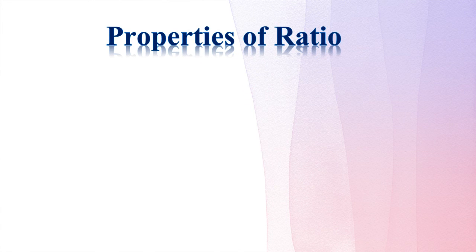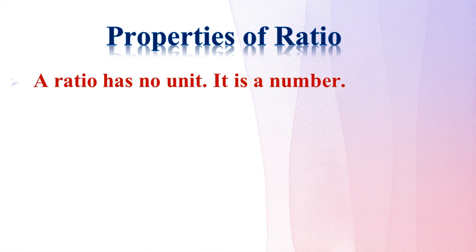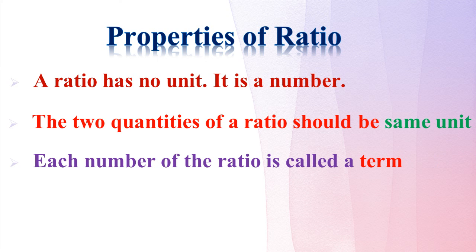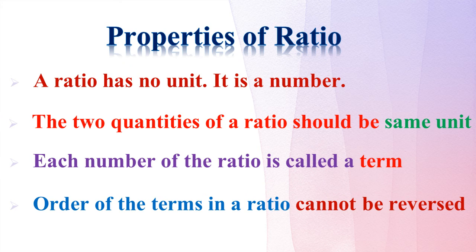Properties of ratio. First property: a ratio has no unit — it is just a number. Second: the two quantities of a ratio should be in the same unit. Third: each number of the ratio is called a term. Fourth: the order of the terms in a ratio cannot be reversed.